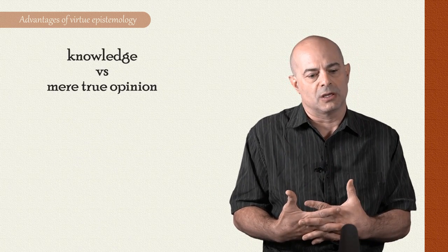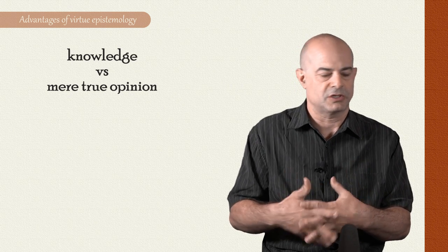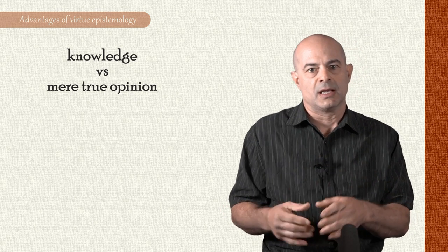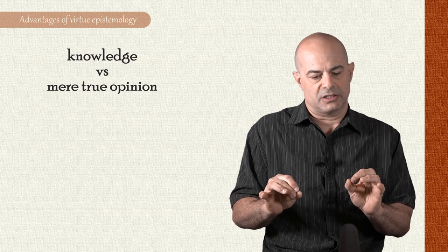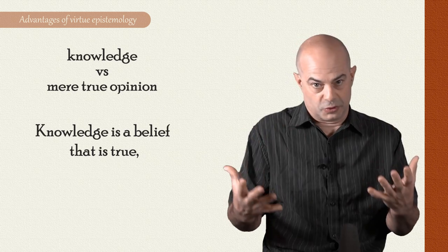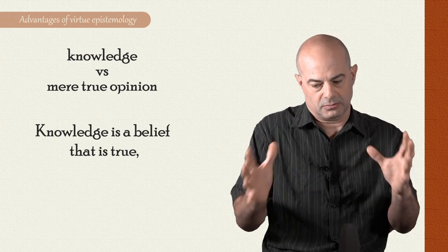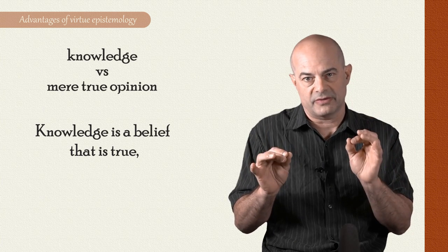Now a standard approach to this question in virtue epistemology is to say the following. In cases of knowledge, you've got three things. One, your belief is true because you can't know something unless you're right about it, that you've got it, you're thinking about it correctly. So your belief has to be true.